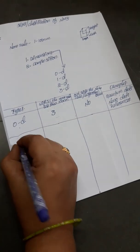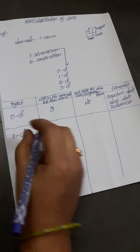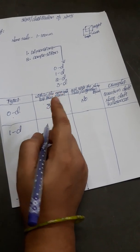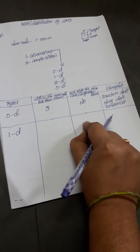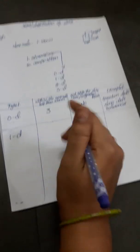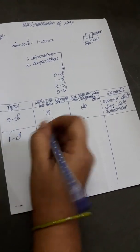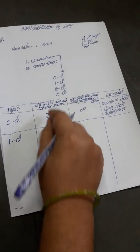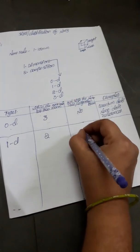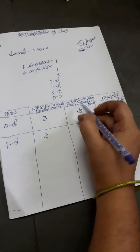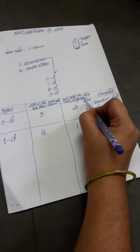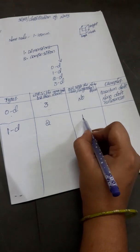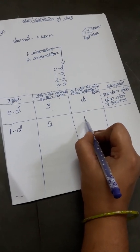Next, we will see one dimensional nanomaterials. One dimensional nanomaterials are materials having one dimension outside the nanoscale and the other two dimensions within the nanoscale. That means two dimensions are within the nanoscale or less than 100 nanometers, and one dimension should be outside the nanoscale or larger than 100 nanometers.